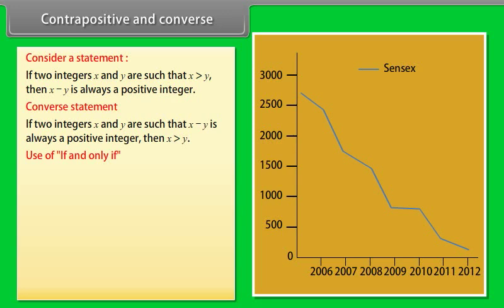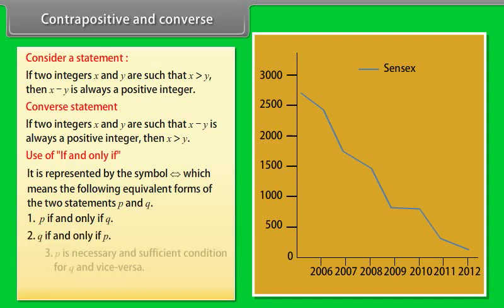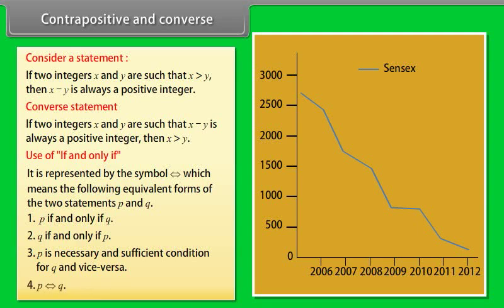Use of 'if and only if': It is represented by the symbol ↔, and means the following equivalent forms for statements P and Q: P if and only if Q; Q if and only if P; and P is a necessary and sufficient condition for Q and vice versa.